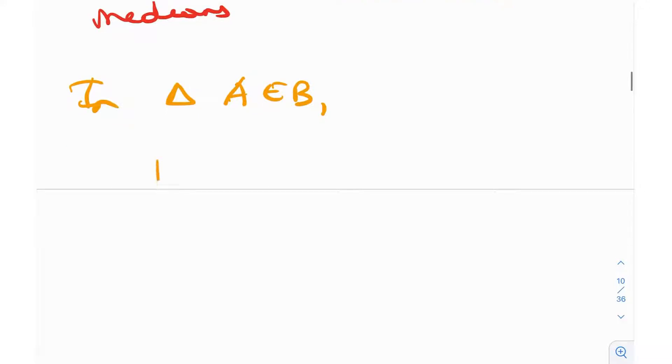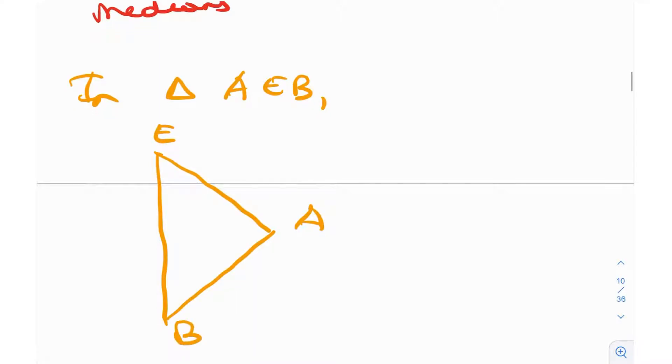So in triangle AEB, if we actually draw it out, it's something like this. This was point A, this was point E, this is B, and this is Y. Connect this to this. We had proved that these three are equal to one another. So what does that mean? Doesn't that mean that Y is the circumcenter of triangle AEB?